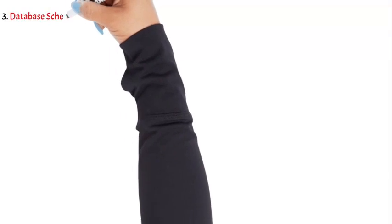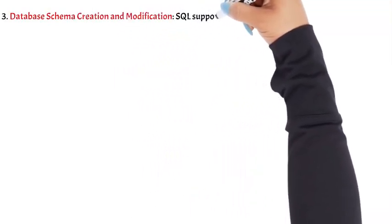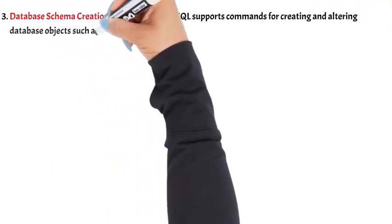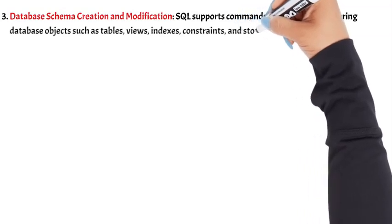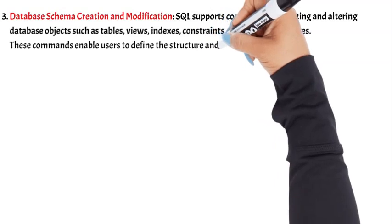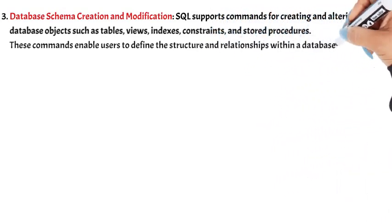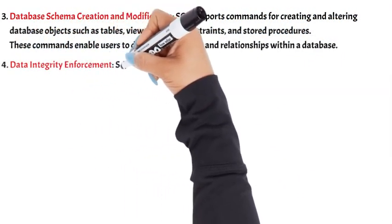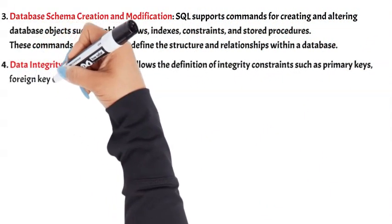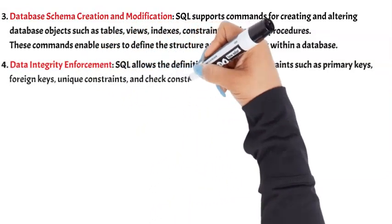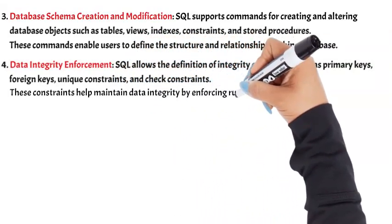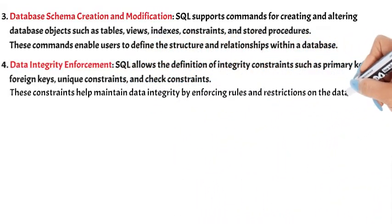3. Database schema creation and modification: SQL supports commands for creating and altering database objects such as tables, views, indexes, constraints, and stored procedures. These commands enable users to define the structure and relationships within a database. 4. Data integrity enforcement: SQL allows the definition of integrity constraints such as primary keys, foreign keys, unique constraints, and check constraints. These constraints help maintain data integrity by enforcing rules and restrictions on the data stored in the database.